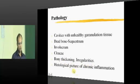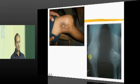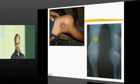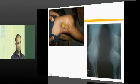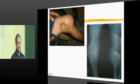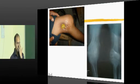Bone irregularities and thickening are present, and histopathology shows a chronic inflammatory picture. Looking at examples: in this chronic osteomyelitis case, you can see a sequestrated bone - a tubular bone that has separated. There is also an adherent puckered scar with a discharging sinus releasing pus and dirty material around the sinus. In another case, a bone is trying to come out - a dead sequestrum - while the native bone has become irregular and thickened with marked sclerosis.